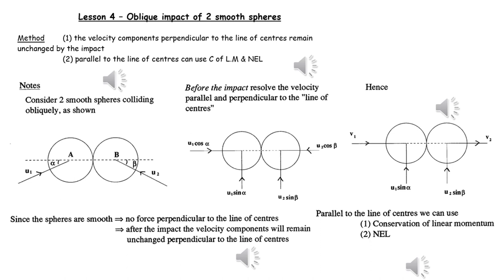The general method for the oblique impact of two smooth spheres: parallel to the line of centres, we can apply conservation of linear momentum, and parallel to the line of centres, we can apply Newton's experimental law. Perpendicular to the line of centres, the velocity before and after impact is unaltered.